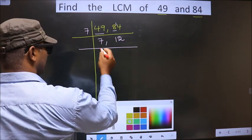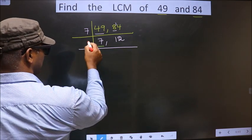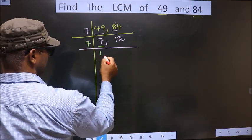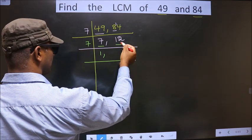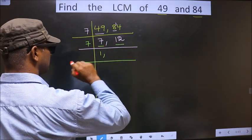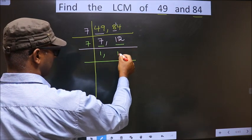Now here we have 7. 7 is a prime number. So, we take 7 once 7. The other number is 12. 12 is not divisible by 7. So, you write down as it is.